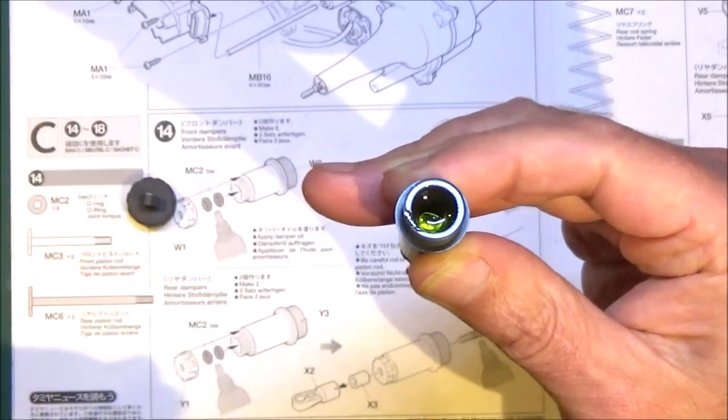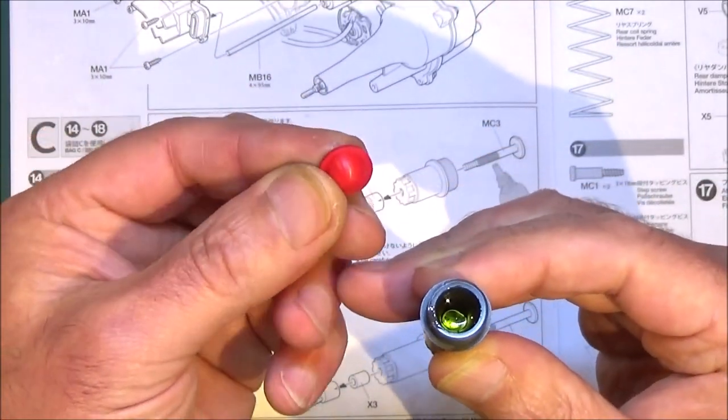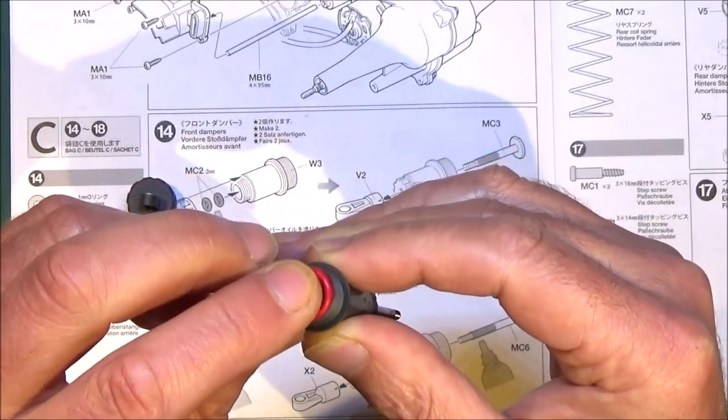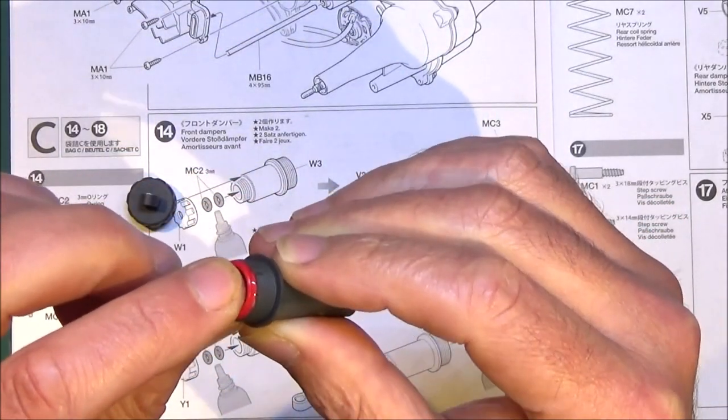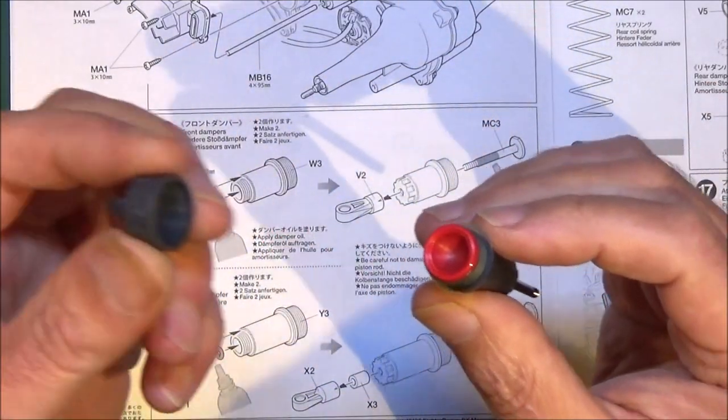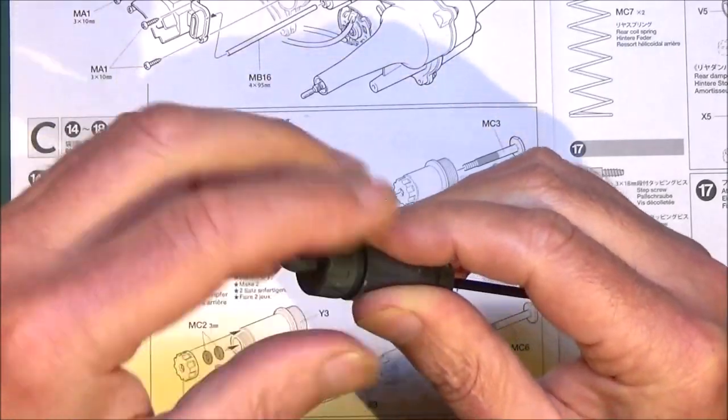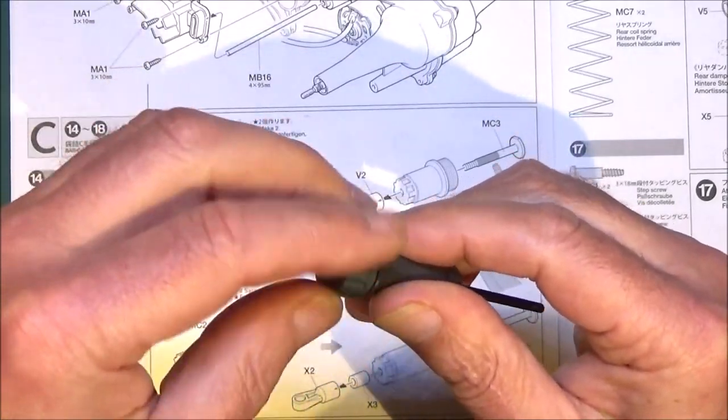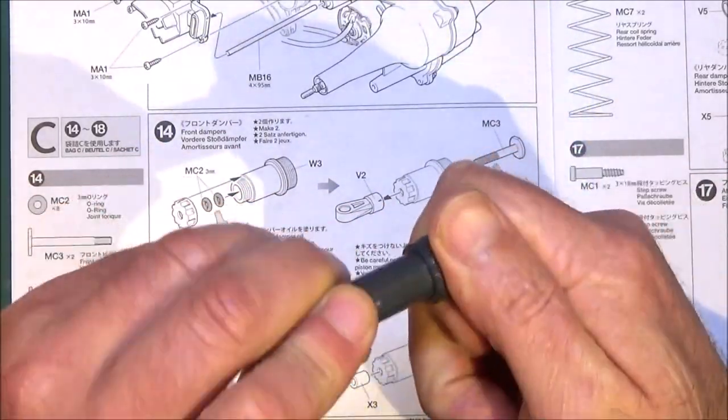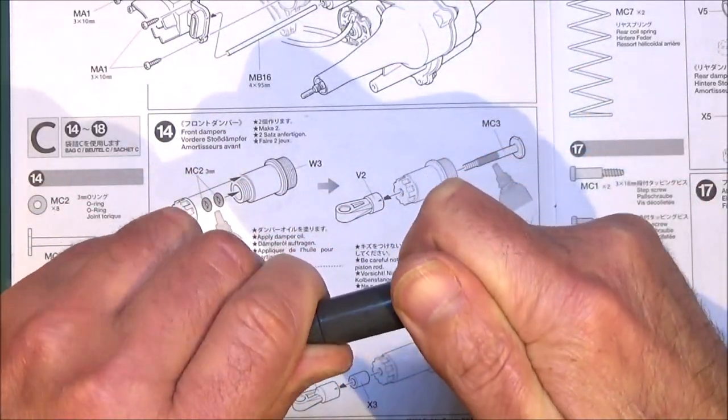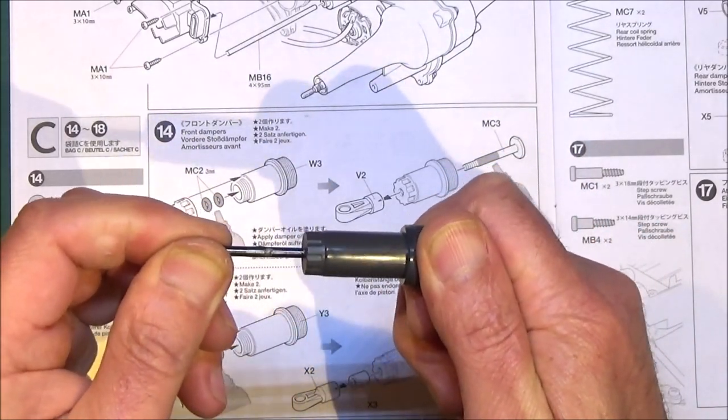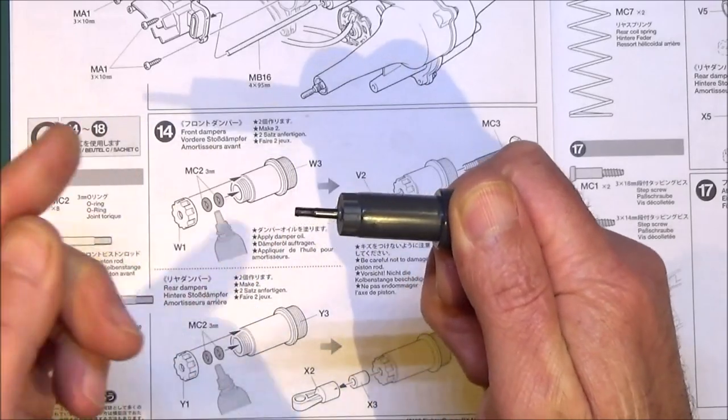For the rear dampers, these are the red ones. These are green for the front. So just put that on. See a bit of oil coming out. That's fine, means it's full to the top. Just get your top cap and screw that on. Then we can tighten them up against each other to get the top and bottom caps nice and tight. Just check. Got a nice bit of damping in there.